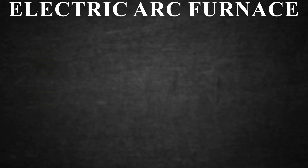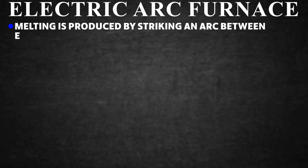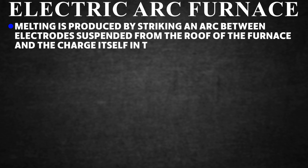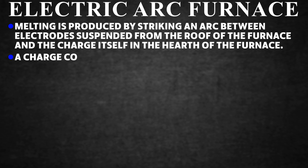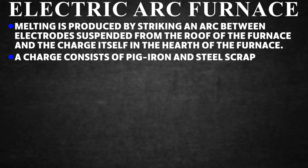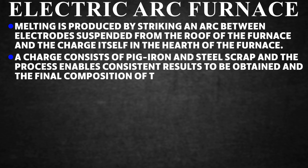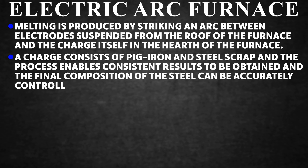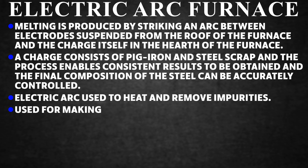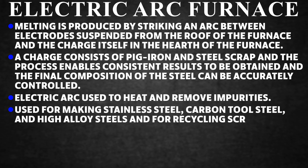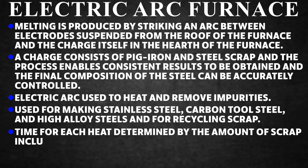Electric Arc Furnace. Melting is produced by striking an arc between electrodes suspended from the roof of the furnace and the charge in the hearth. The charge consists of pig iron and steel scrap, and the process enables consistent results with the final composition of the steel accurately controlled. Electric arc heat removes impurities and is used for making stainless steel, carbon tool steel, high alloy steels, and for recycling scrap. Time per heat is determined by the amount of scrap included in the charge.